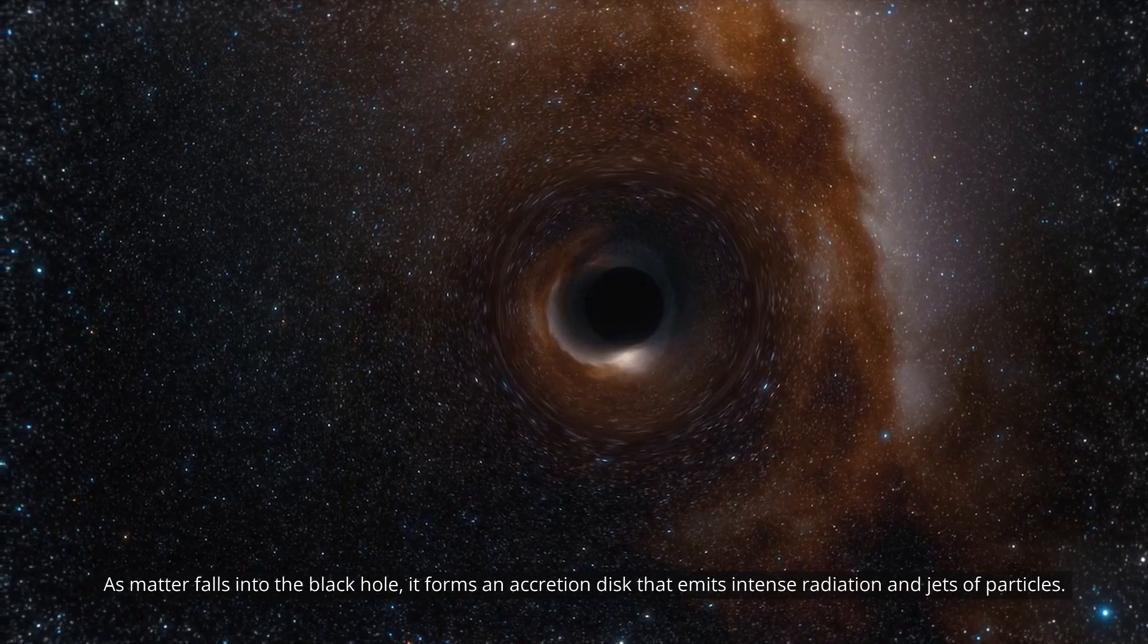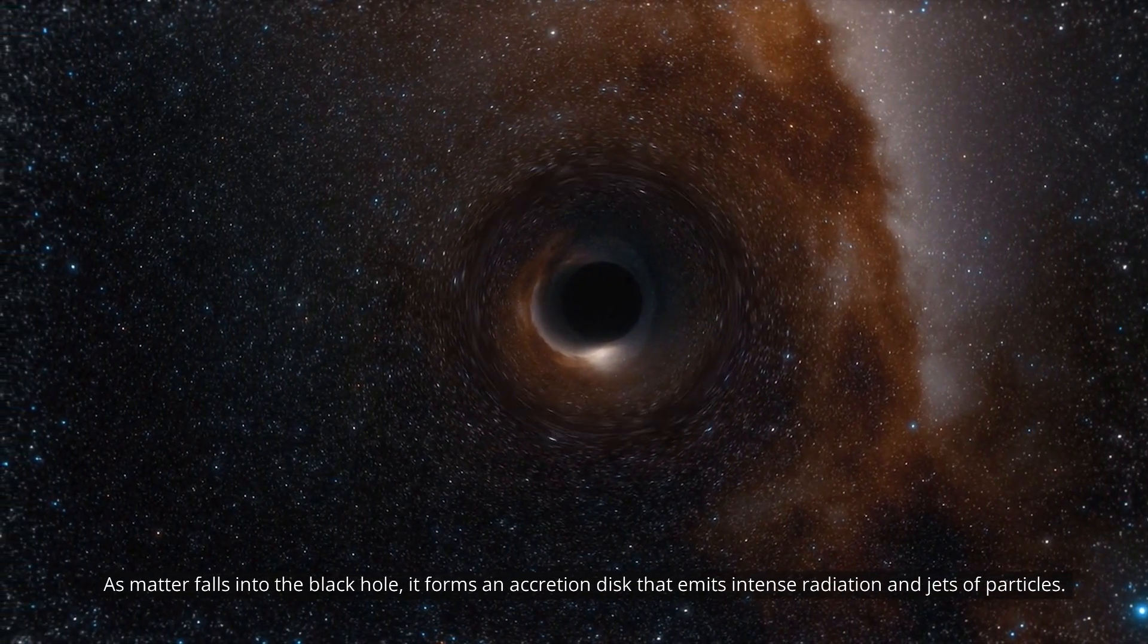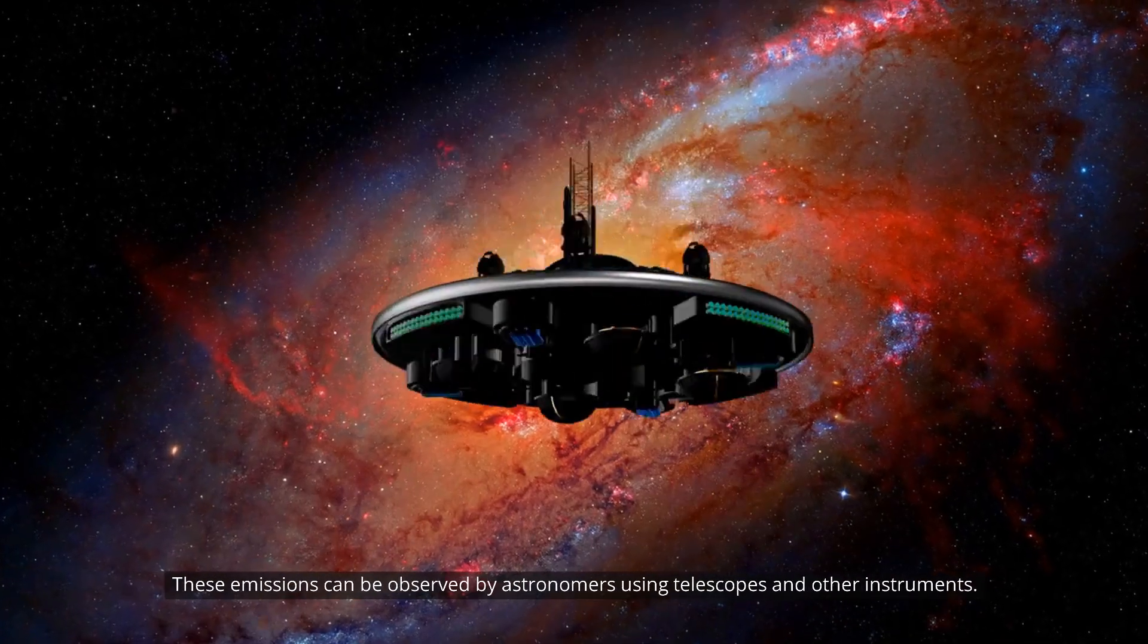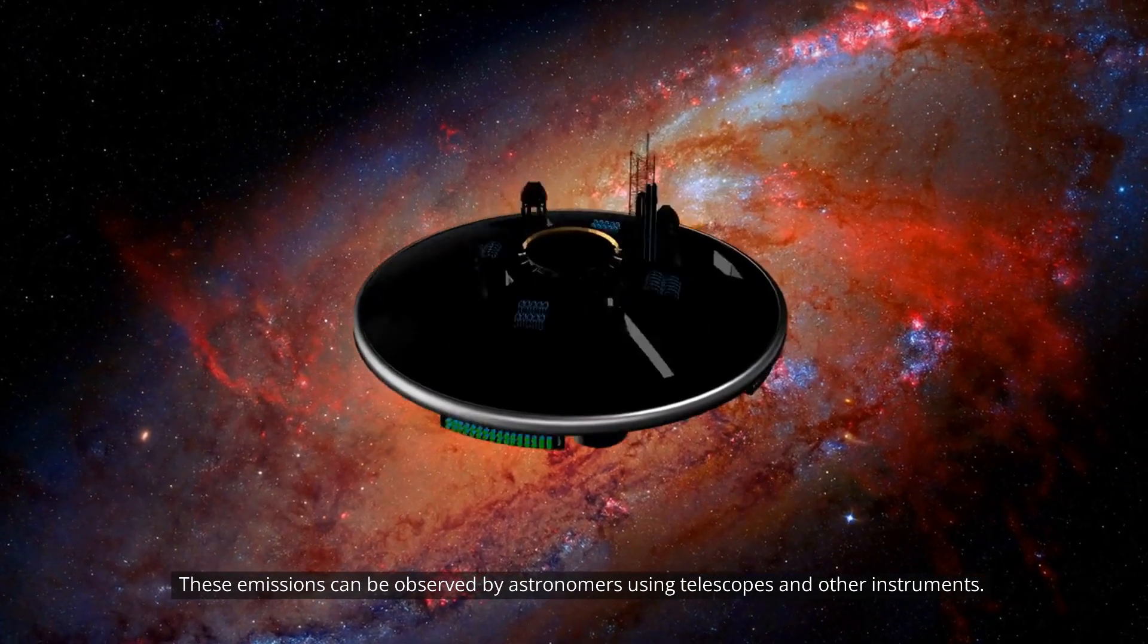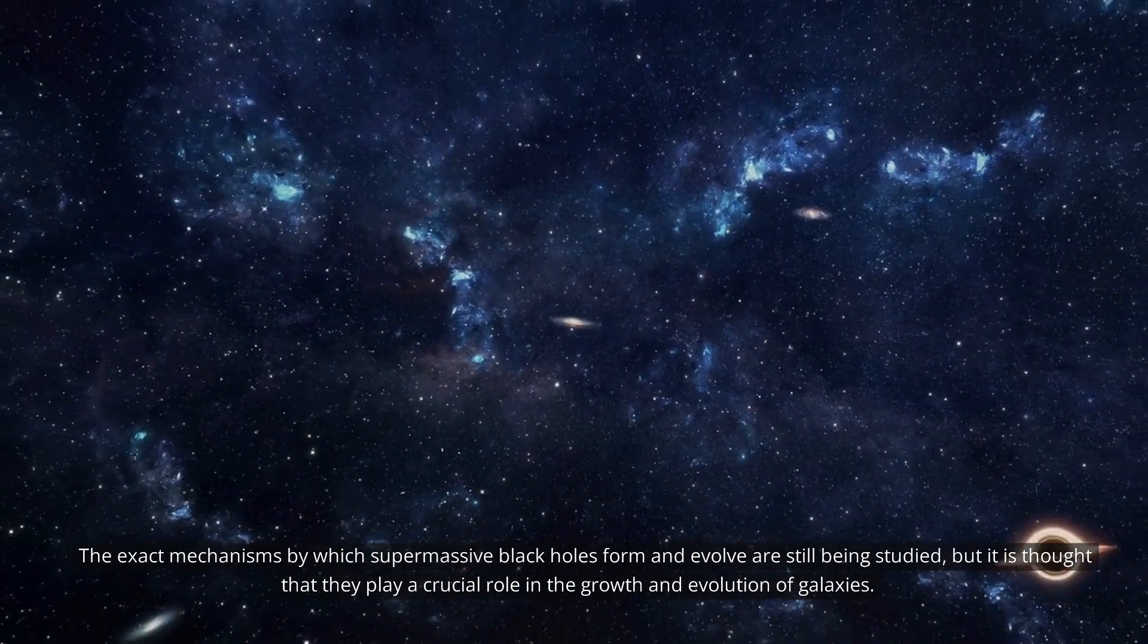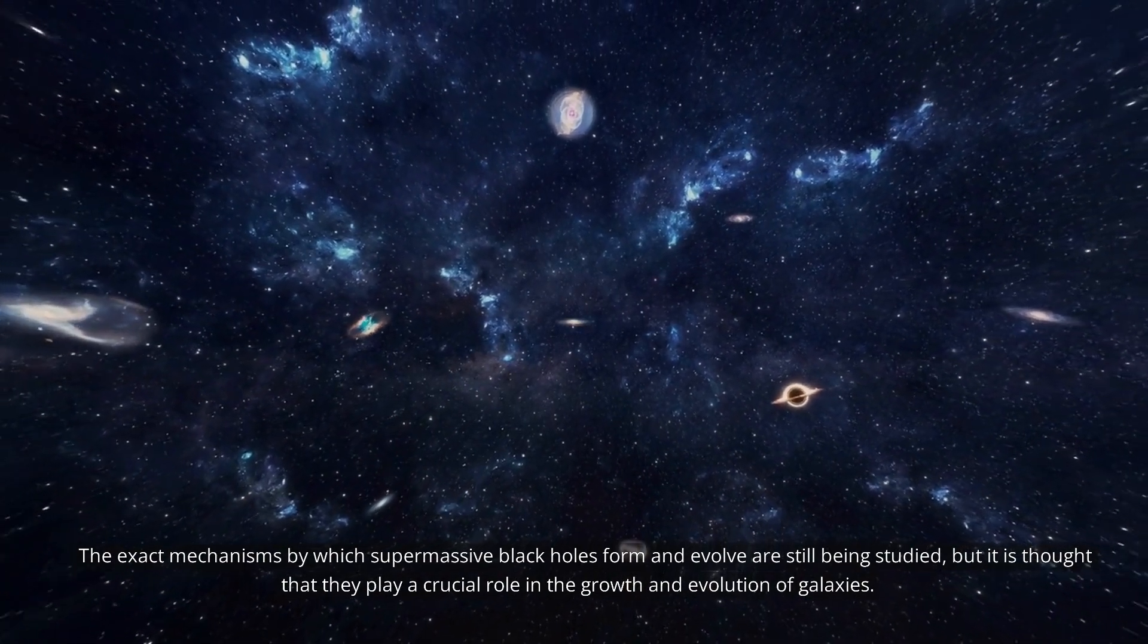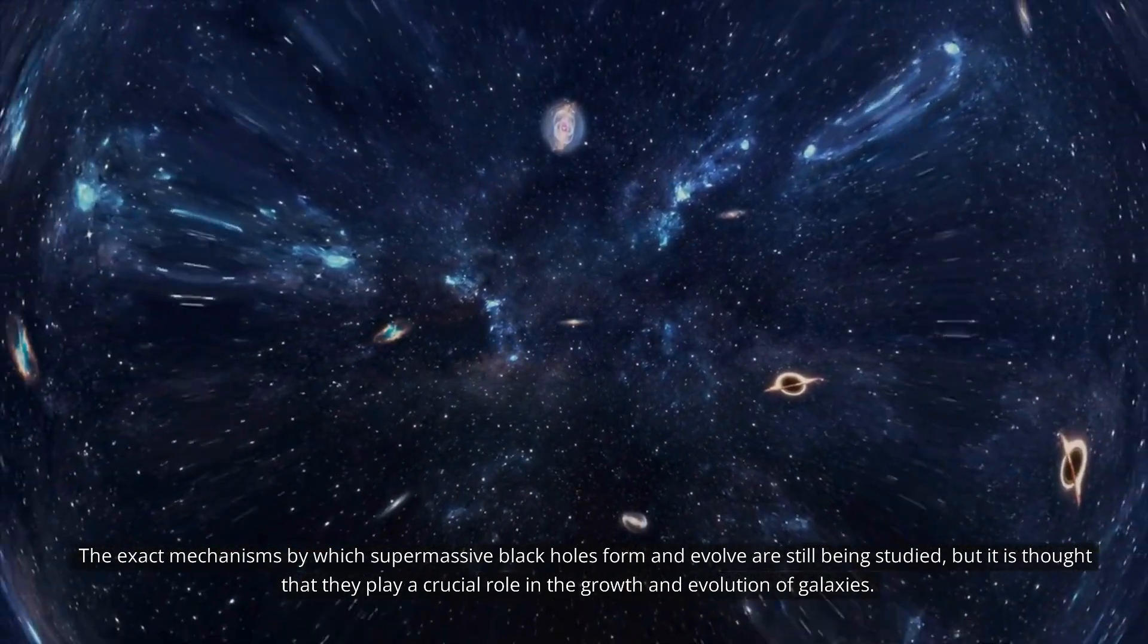As matter falls into the black hole, it forms an accretion disk that emits intense radiation and jets of particles. These emissions can be observed by astronomers using telescopes and other instruments. The exact mechanisms by which supermassive black holes form and evolve are still being studied, but it is thought that they play a crucial role in the growth and evolution of galaxies.